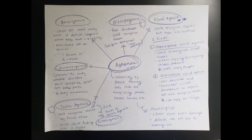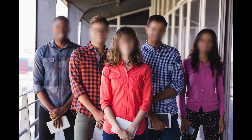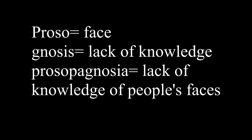Let's jump to prosopagnosia. Prosopagnosia is face blindness — exactly what it sounds like: they can't recognize faces. This is due to occipital temporal lobe damage, and on a day-to-day basis, whoever you run into, you aren't recognizing who that person is. The word prosopagnosia comes from Greek — 'proso' means face, and 'agnosia' means lack of knowledge, so it means a lack of knowledge in recognizing faces.